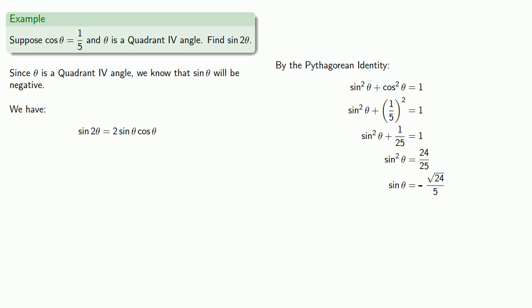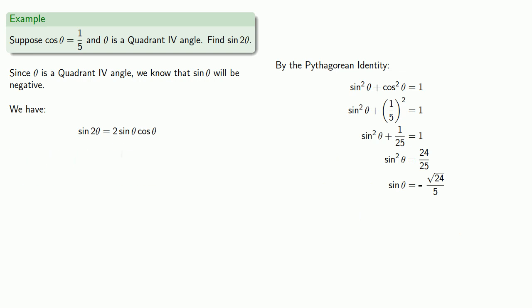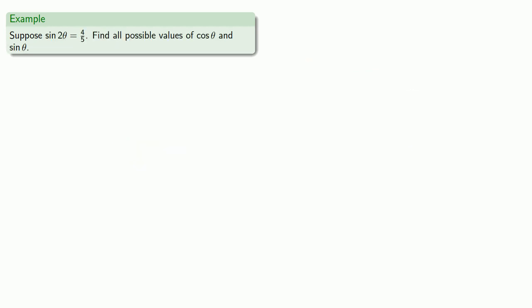So we can substitute that into our formula, and that gives us the sine of two-theta. Now, if we don't know anything about theta, we end up with a bunch of possibilities for the trigonometric function values.